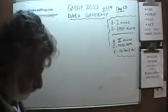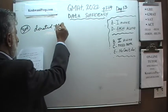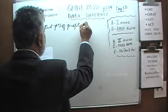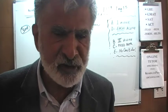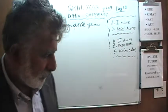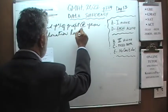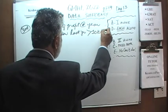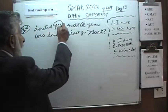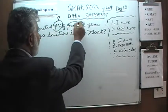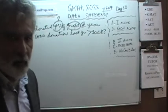Problem 304: we donate a fixed percentage of profit each year. The question is: was the donation last year greater than $10,000? We need two pieces of information — what percentage we donate each year, and how much profit we made last year. If we know both, we can answer whether the donation exceeded $10,000.